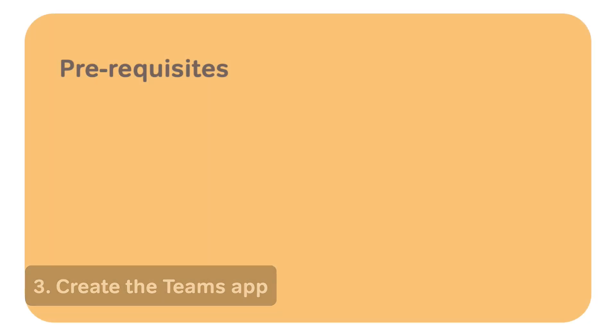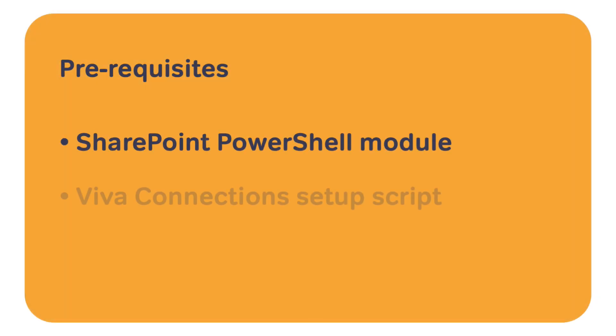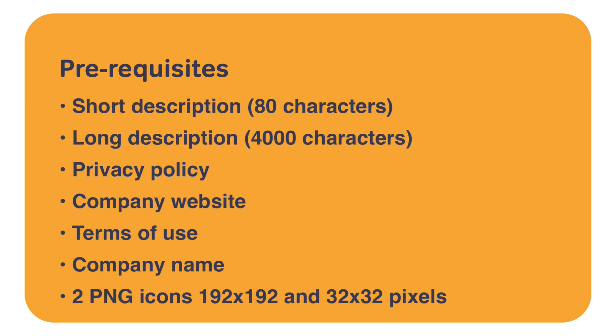Now we're on to step three and we're going to create the app for Viva Connections. In order to do that you need PowerShell access and you need the Viva Connections setup script which is available from Microsoft — I'll leave a link to it in the description. Once you've downloaded that there are some other prerequisites to consider. What we're doing here is creating a Teams app, and every Teams app needs a bunch of information that it will display in the Teams app catalogue. The things in this list are what you need in order to do this properly.